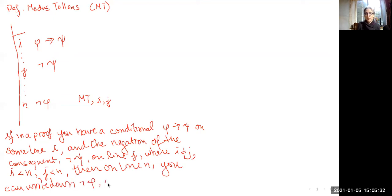With annotation MT for modus tollens, lines i and j. So there you have it.